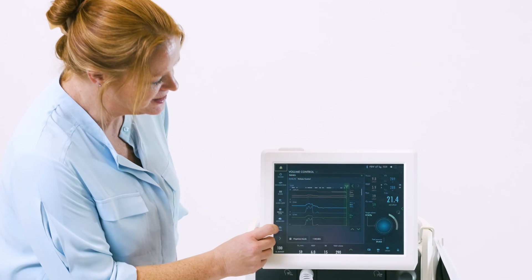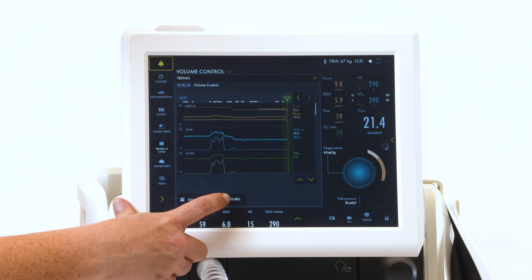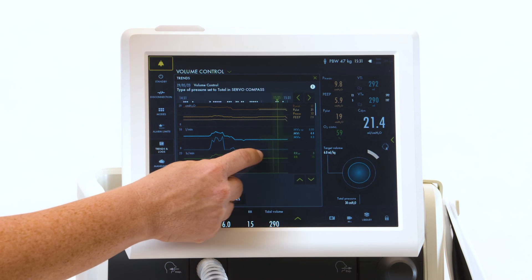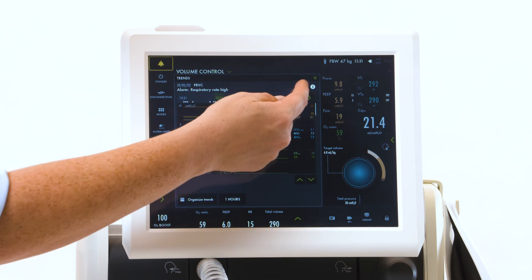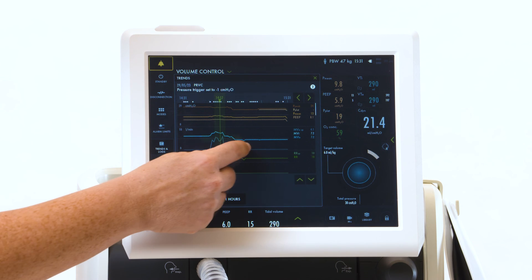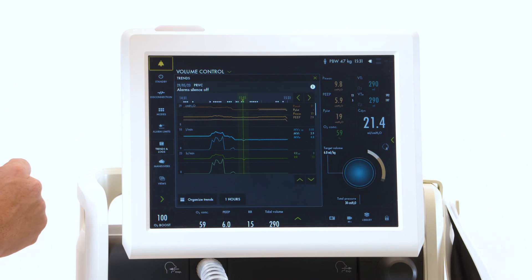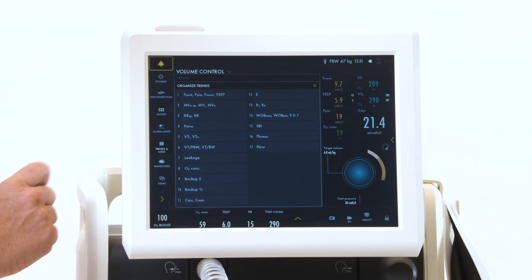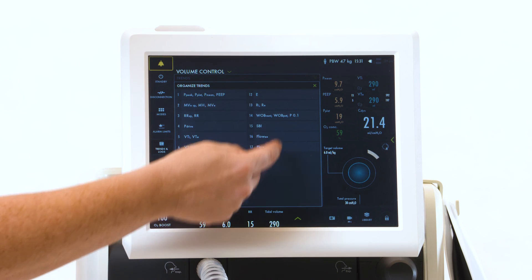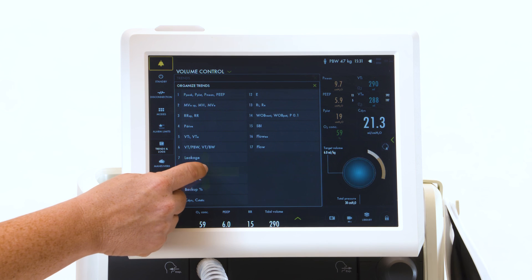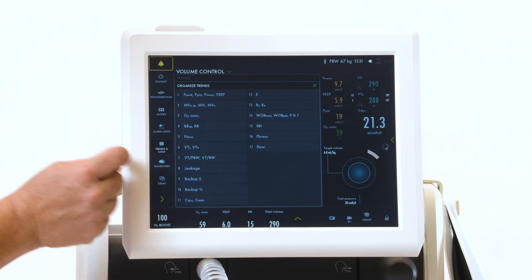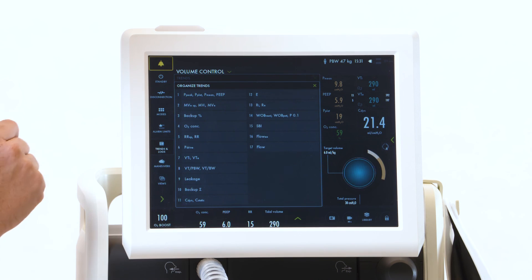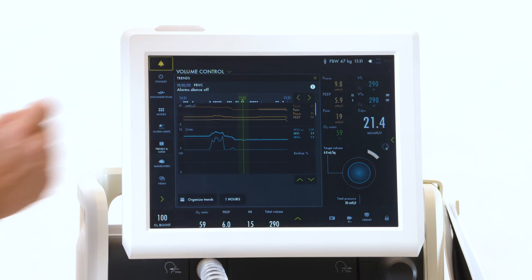When looking at your trends, you can look anywhere from an hour up to 72 hours of time. As you move your cursor, your numbers that appear will be the numbers along that axis. Under here is an organized tab. In order to change the way that they are displayed, touch and drop to change the order. Red X to get out.